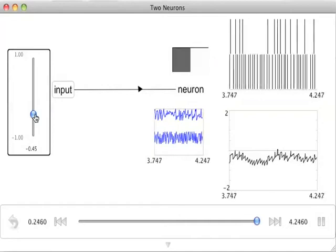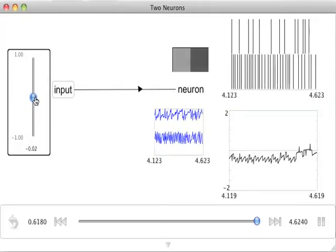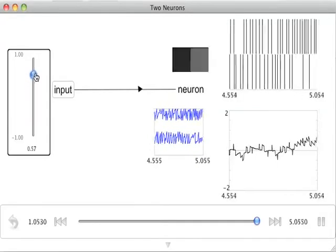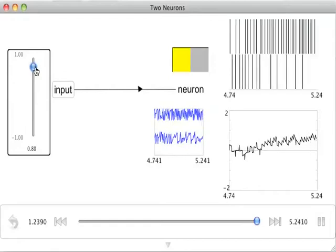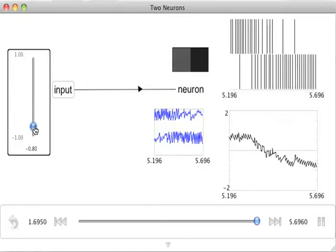What is of interest here is to note that the neurons respond very differently to the input. As I increase the input, the top neuron begins to fire more, but the bottom neuron begins to fire less. So you can see that the neurons are encoding information about the input in a complementary push-pull fashion.